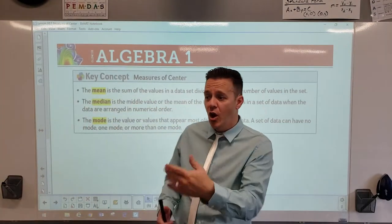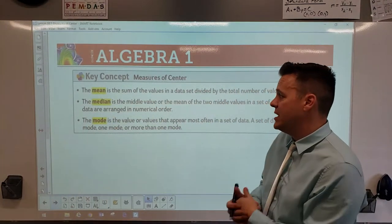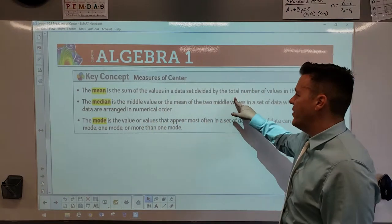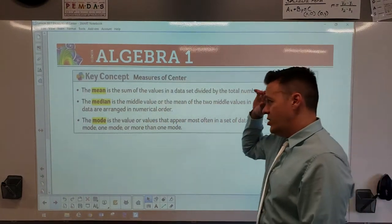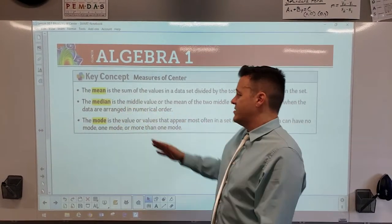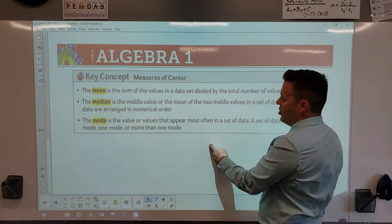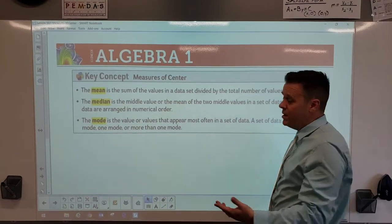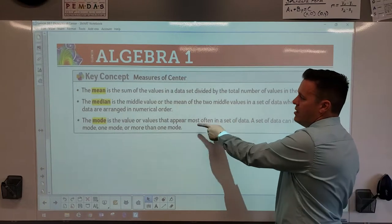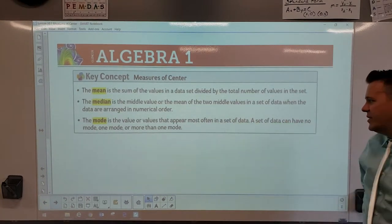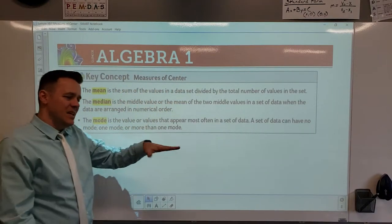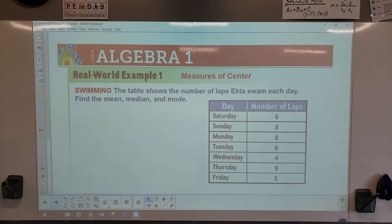If you have the notes from me, great — if not, get them in class or print them from Canvas and annotate. Mean is the sum of all values divided by the total count. Median is finding the number in the middle; if there are two middle numbers (even count), you add those two together and divide by two. Mode is what appears most often in a data set — there could be no mode, one mode, or more than one mode.